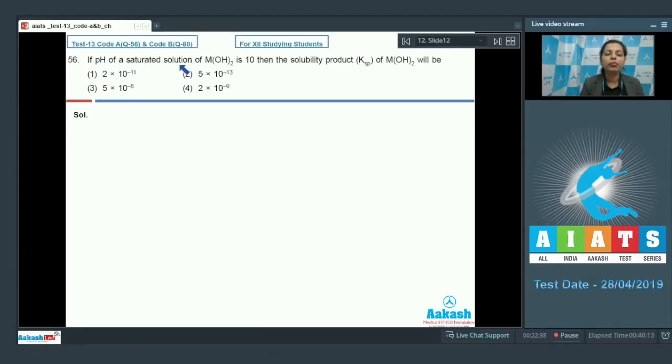Question number 56. If pH of a saturated solution of M(OH)₂ is 10, then the solubility product Ksp of M(OH)₂ will be. In this case, we have this compound and it forms these two types of ions.